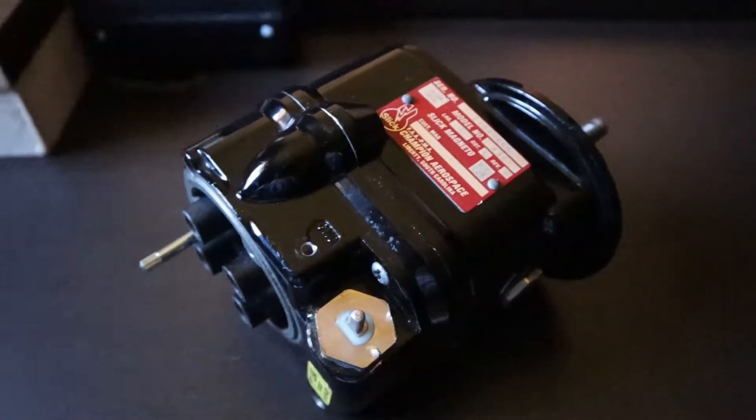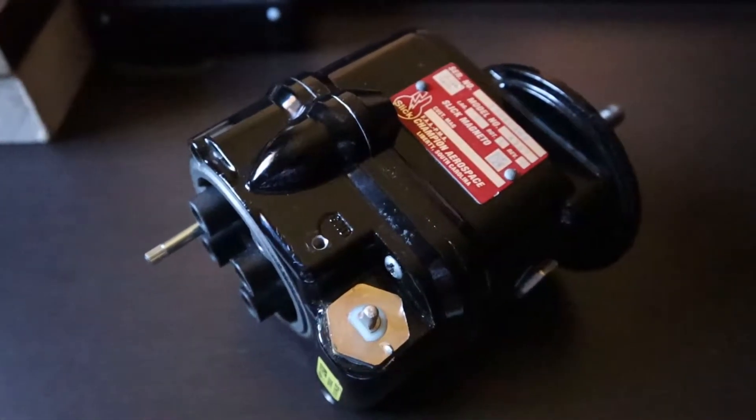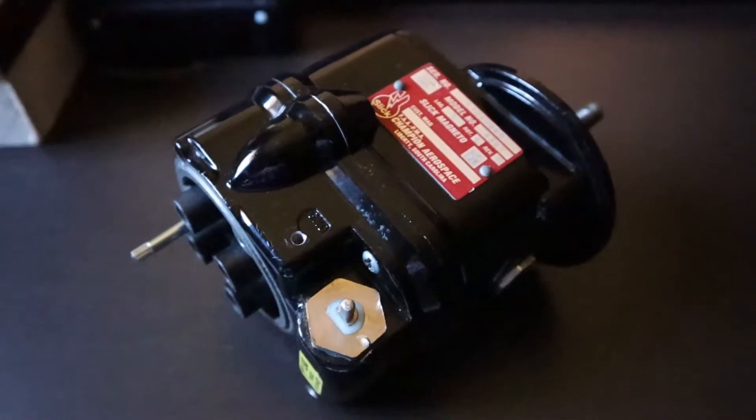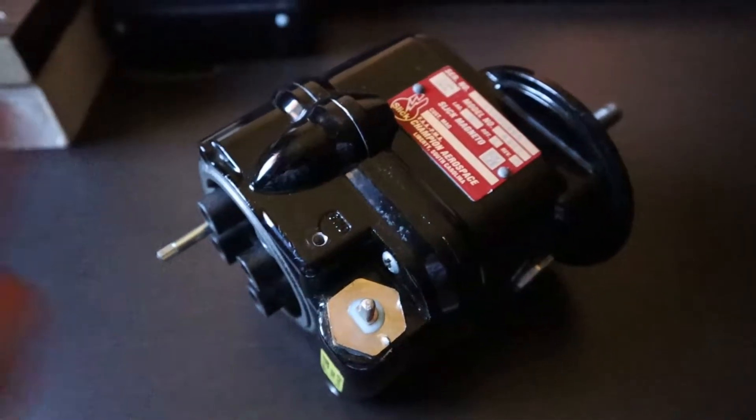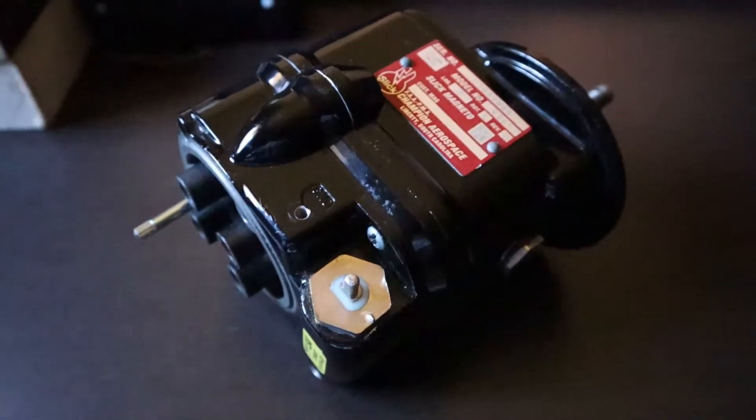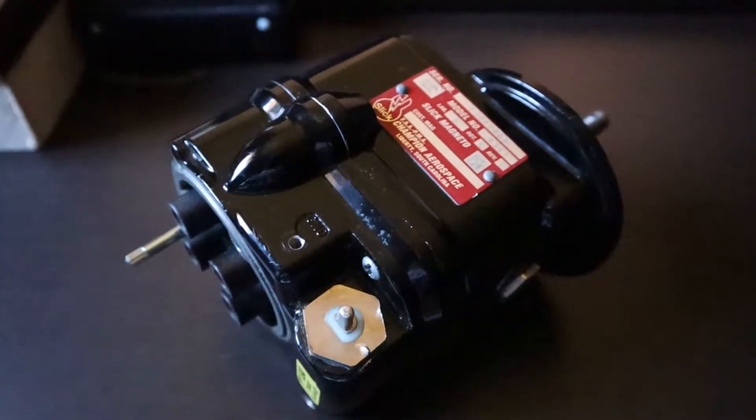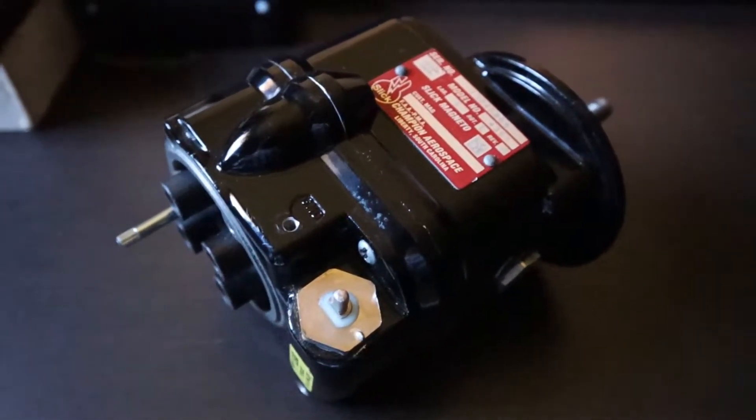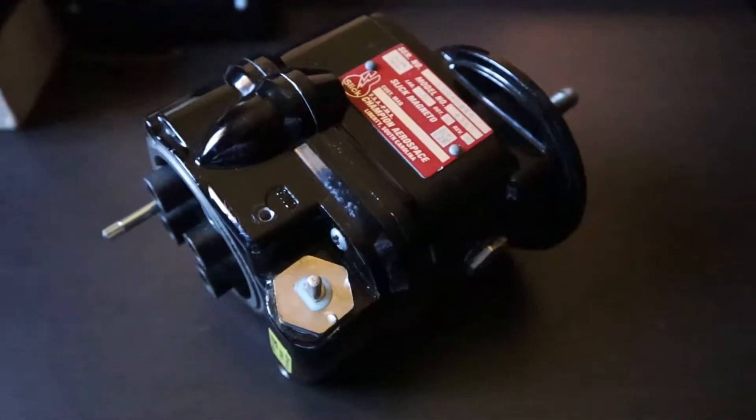What I'll be doing today is an overview and demo of how to internally time one of these. What is a magneto? A magneto is a self-contained electrical device that is used to send the spark to the engine in a lot of small airplanes.